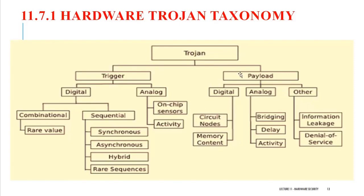What we understand from here is that hardware Trojans have two different parts: one is the triggering part and the second is the payload part. Based on a particular event being triggered, the payload will be executed. The payload is going to perform only malicious activity and is going to compromise the CIA — confidentiality, integrity, and availability — without the user's knowledge. All these things happen only in hardware devices.